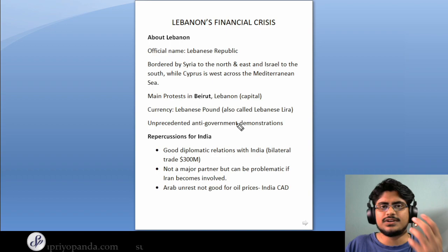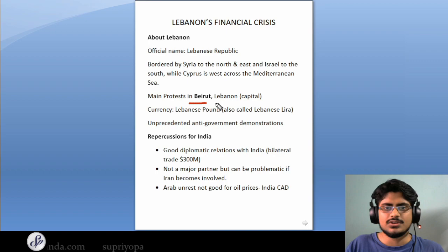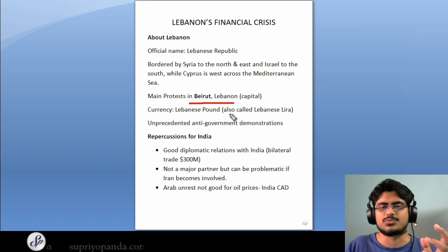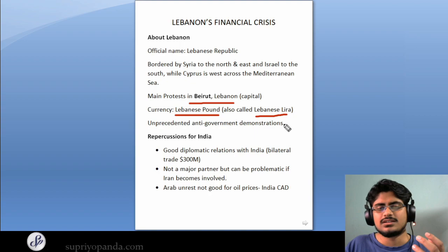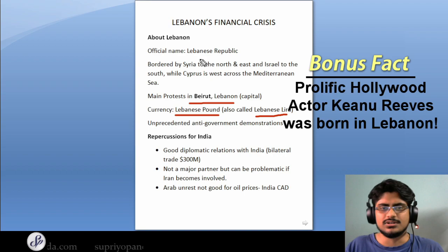The main protests are happening in Beirut, Lebanon, which is the capital of Lebanon. There has been a lot written about these protests, and the entire economy of Lebanon is on the brink of collapse. The currency of Lebanon is the Lebanese pound, and the Lebanese also call it the Lebanese lira — so don't get confused if this word is spoken about.